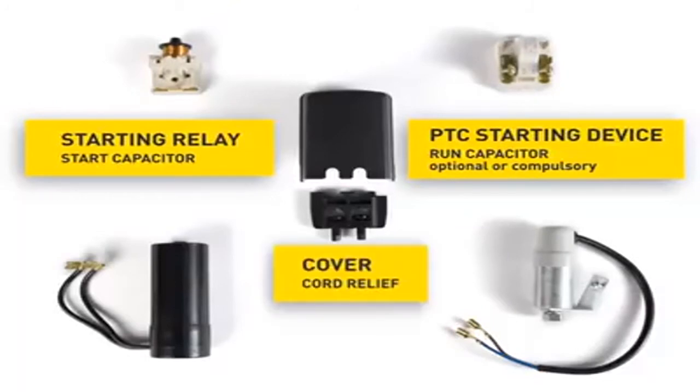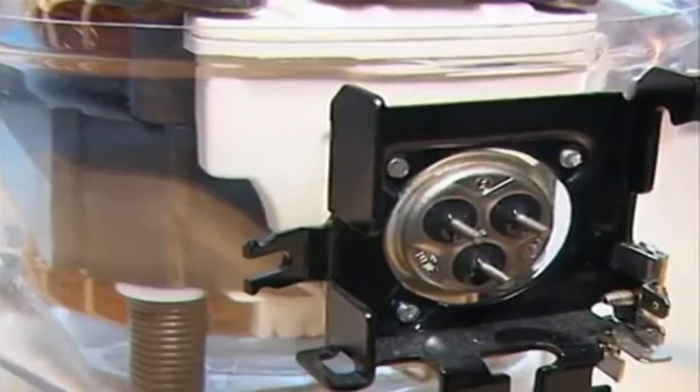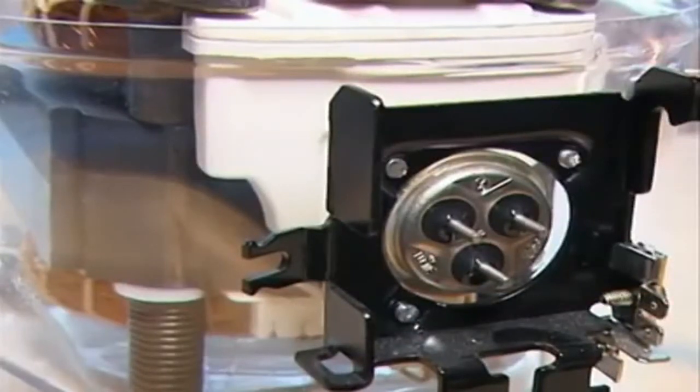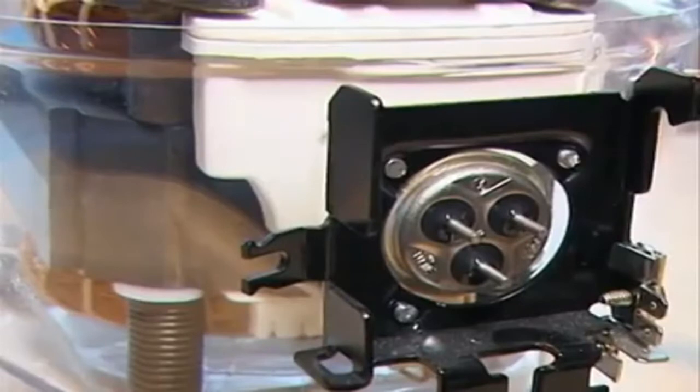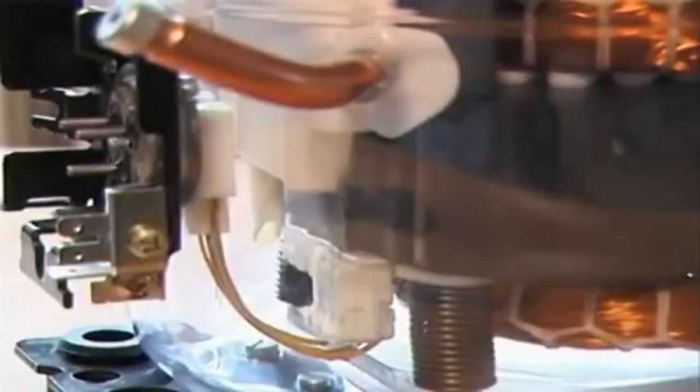The starting unit is mounted on the current lead-in of the compressor shell. It's the starting unit's task to supply the start winding with power for a short moment in order to enable the starting of the compressor. As soon as this has happened, the motor operates only through the main winding. The starting unit is connected with the current lead-in of the compressor shell. The power cable ensures a flexible connection to the motor.